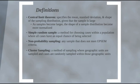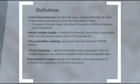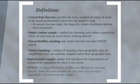Cluster sampling is a method of sampling using geographic units or some group to sample cases, and then cases are randomly sampled within those geographic units. This can also be done with classrooms or other situations with natural clustering. A representative sample is a sample that reproduces the characteristics of interest of the population from which it is drawn.